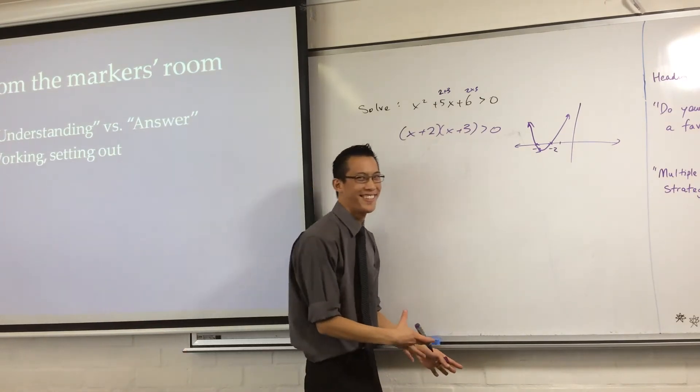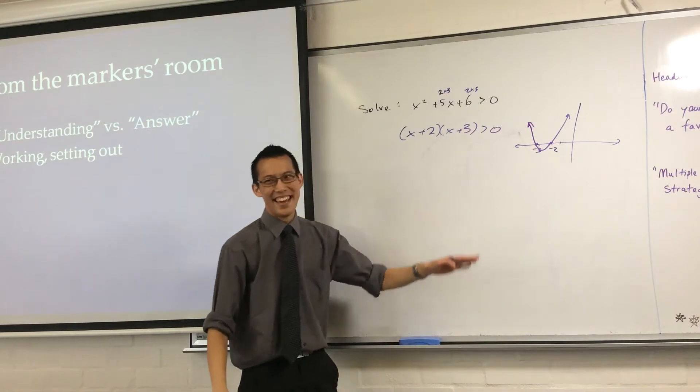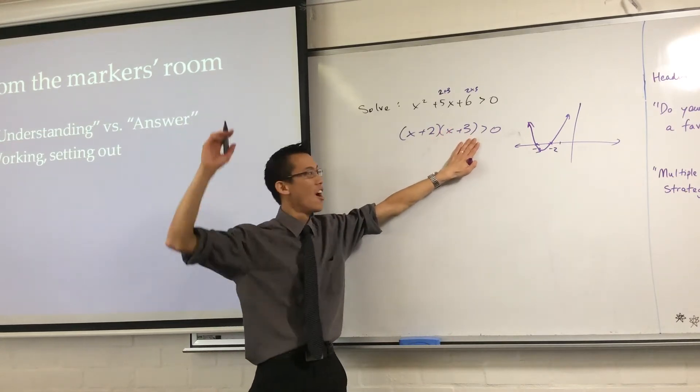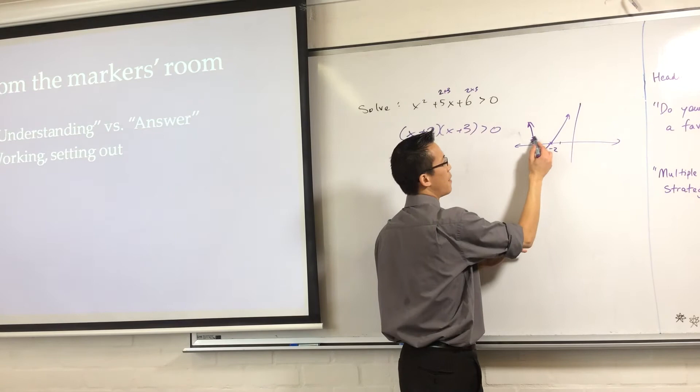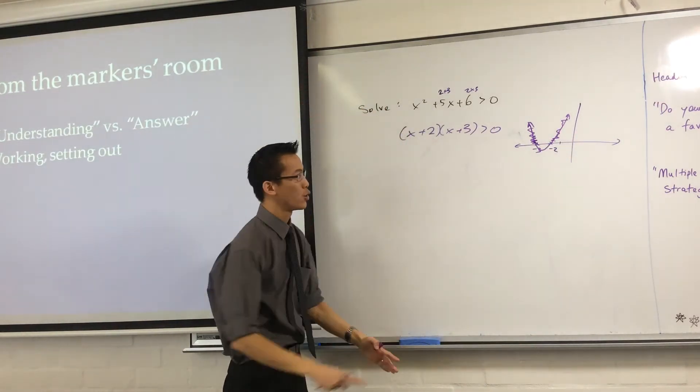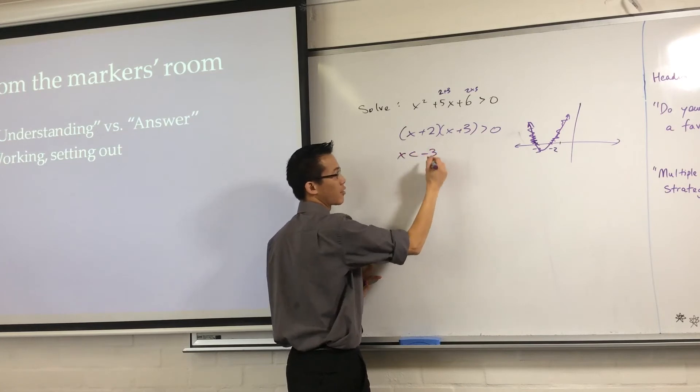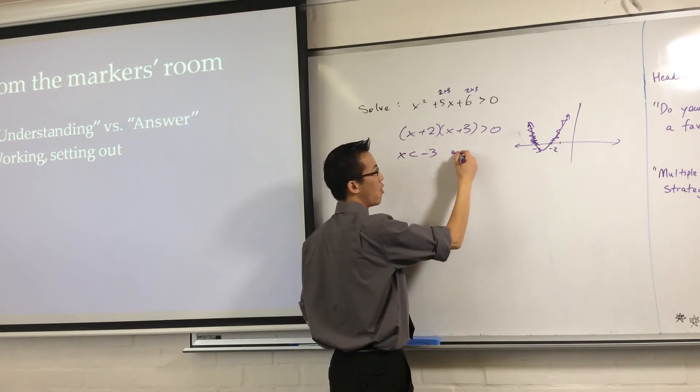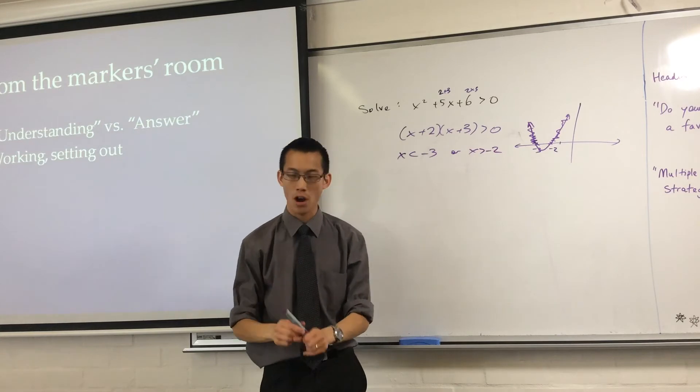So, then you look at yourself and you're like, okay, I want this to be greater than 0. I want these parts that are above. See that? That's greater than 0. They're above. So, therefore, I want x is less than negative 3, or x is greater than negative 2. And that's it.